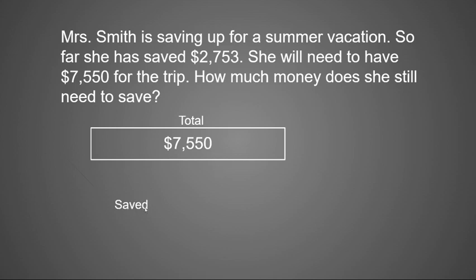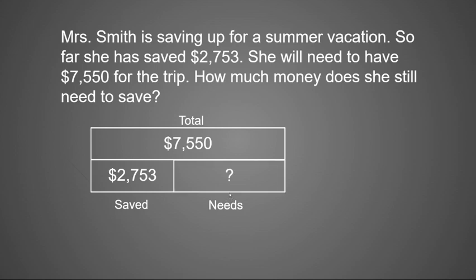Underneath that, we're going to have the part that she saved, so I'm going to make a box right underneath my total and write that she saved $2,753. To the right of that, she still needs more money. So we have the money she saved, the money she needs, and together they'll make our total. We don't know how much she still needs, so that's where our question mark goes. Since we have a total and one part, we're going to need to subtract to find the difference.